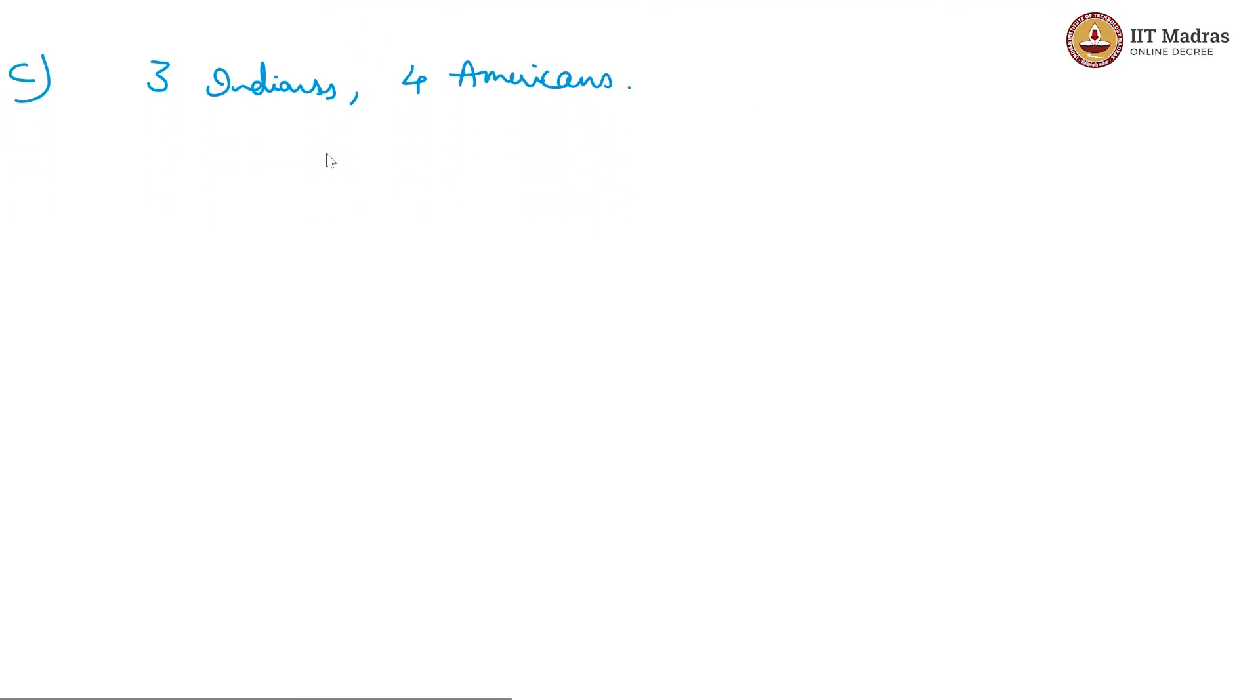So, if you can choose any number, there are three Indians and four Americans. So, there are seven in all. So, if you can choose any number, what you are getting is 7C1 plus 7C2 plus 7C3, so on till 7C7. This is if there are no restrictions. And this is equal to 2 power 7 minus 1, that is 127.